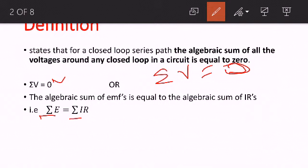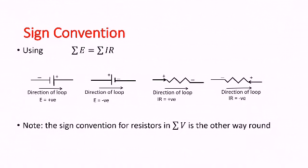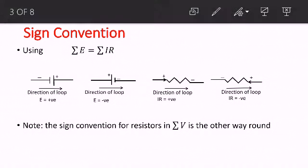The algebraic sum of the EMF is equal to the algebraic sum of IR. The next thing we are going to be looking at is sign convention, because when we talk about algebraic sum, it means that we need to take the issue of sign convention seriously. We are using summation of E equal to summation of IR.